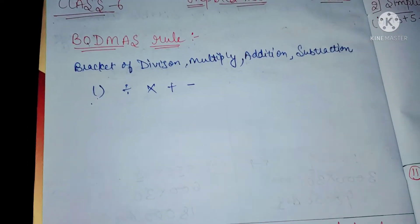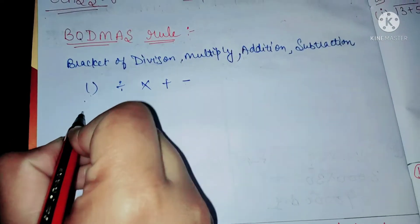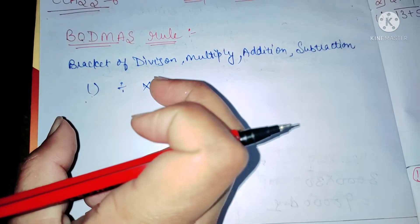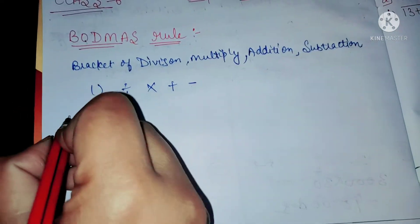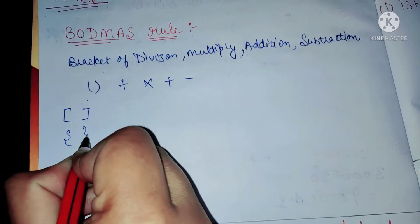In brackets, we have three types of brackets. First of all, we have to do a square bracket, and after that curly bracket, then square bracket.